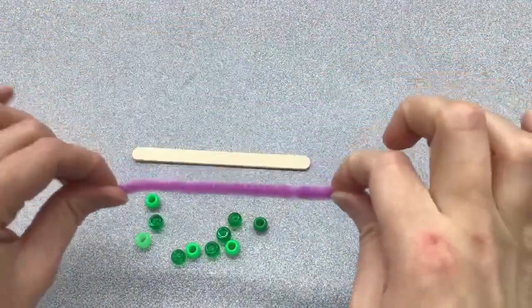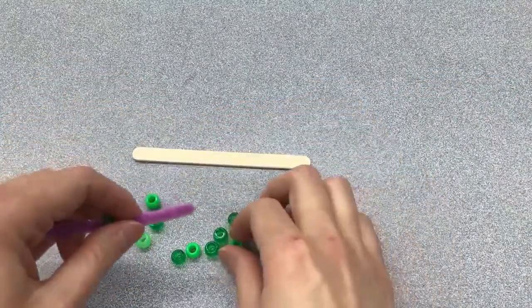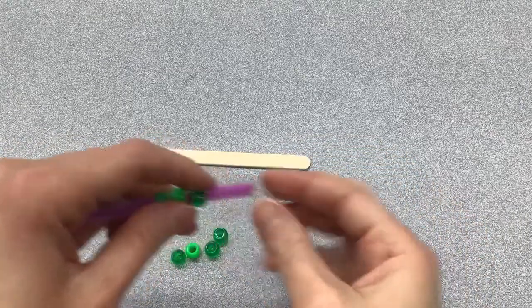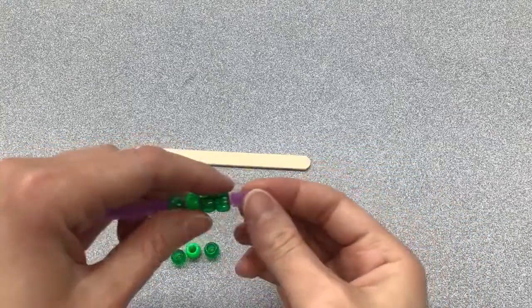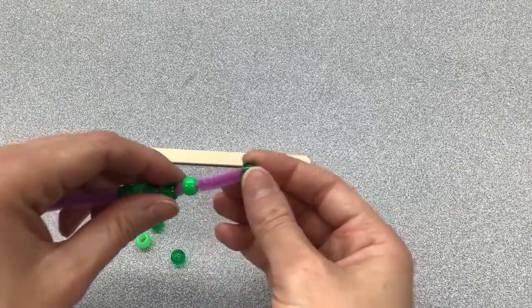So first we're going to string the beads onto the pipe cleaner. And the pipe cleaner has wire in it, so the ends can sometimes be a little pointy. So I'm just going to be careful not to poke myself with the end of the pipe cleaner while I'm stringing these beads.